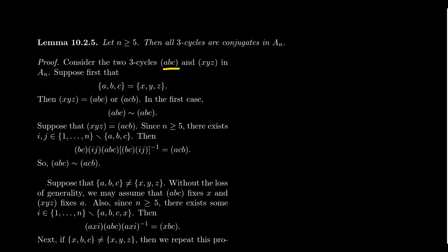Consider two 3-cycles (abc) and (xyz) inside Aₙ. We consider the overlap between their letters. First case: if {a,b,c} = {x,y,z} as sets, there are only two possibilities — (xyz) = (abc) or (xyz) = (acb). If they're equal, they're trivially conjugates (conjugate by the identity). If (xyz) = (acb), that's the inverse of (abc), and we need to show a 3-cycle is conjugate to its inverse in Aₙ when n ≥ 5.